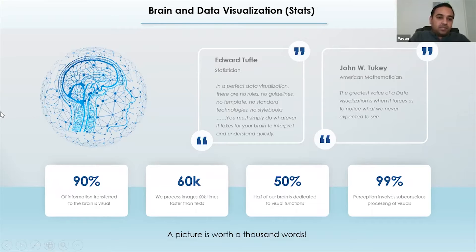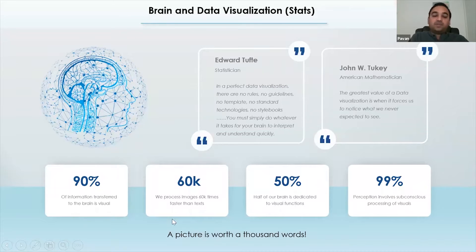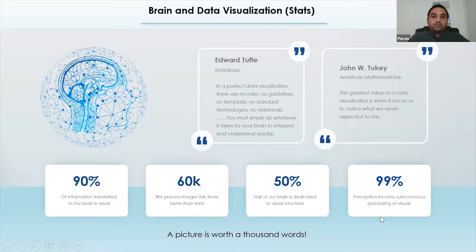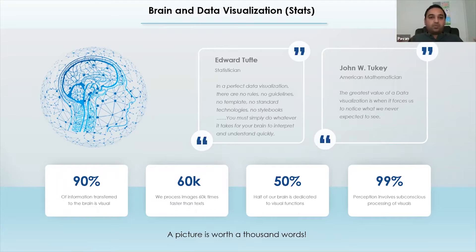Our 99% of perception — we build a perception about something, like if I've never seen IIT Bombay, but just because of a conversation with my friend I would visualize how it might look and how the professors there might look. So 99% of our perception comes from visuals. There are two notable quotes I really liked. Edward Tufte, an American statistician, says: in perfect data visualization there are no rules, no guidelines, no template, no standard technologies, no style books — you must simply do whatever it takes for your brain to interpret and understand quickly, simple and sober, and it should convey the message you are planning to keep.